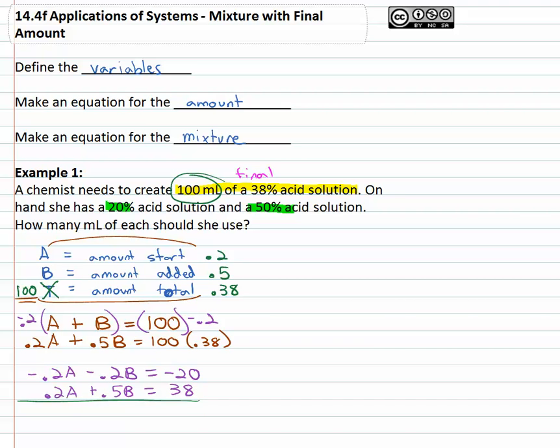So we can now add these together. The A's are gone. We get point three B equals eighteen.